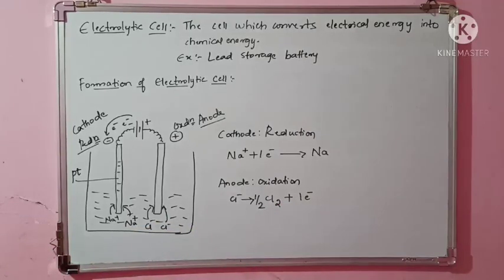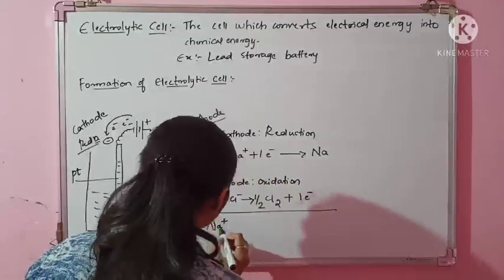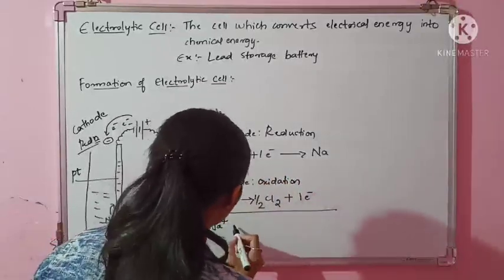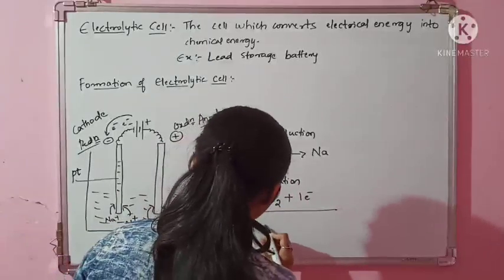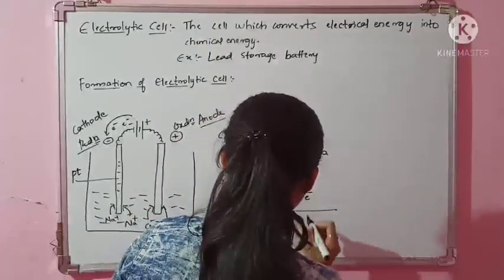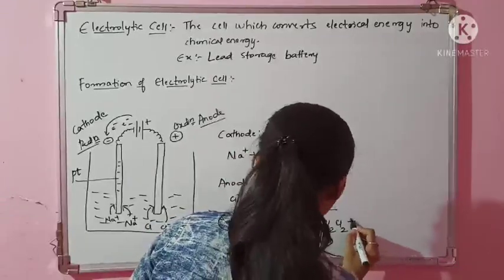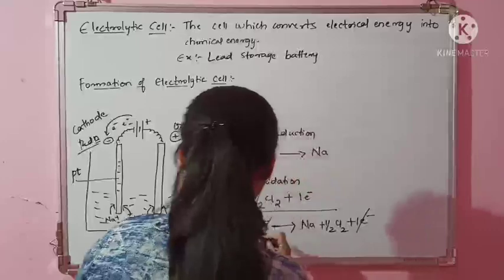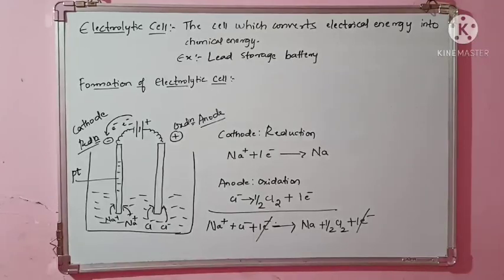The total balanced equation can be written as: Na⁺ + Cl⁻ + 1 electron → Na + ½Cl₂ + 1 electron. The electrons on both sides cancel out, giving the overall reaction. This is how the formation of the electrolytic cell takes place — NaCl solution with two platinum electrodes, where a redox reaction occurs.